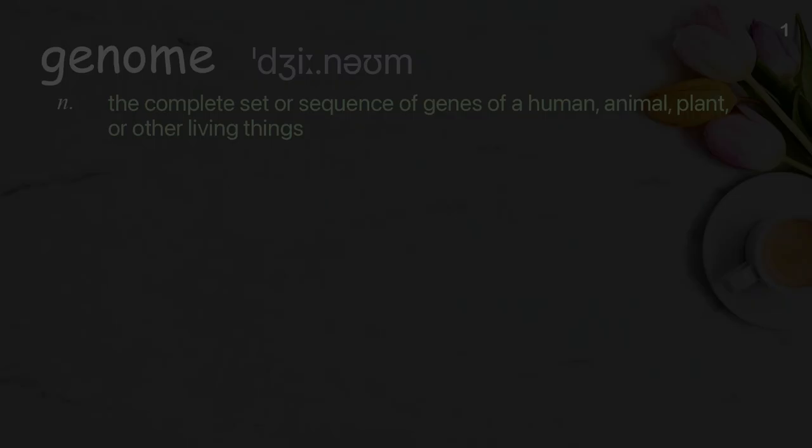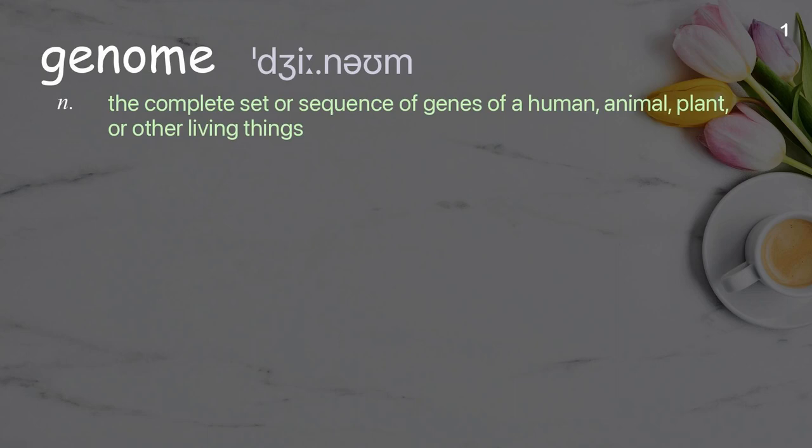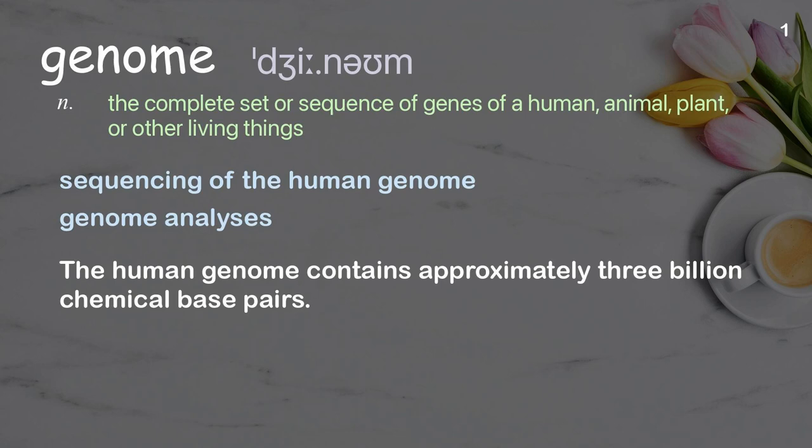Genome: the complete set or sequence of genes of a human, animal, plant, or other living thing. Examples: sequencing of the human genome, genome analyses. The human genome contains approximately 3 billion chemical base pairs.